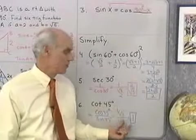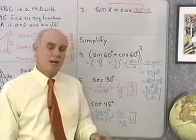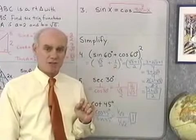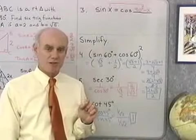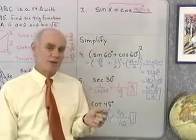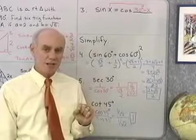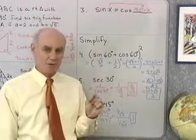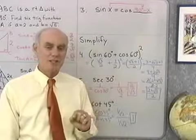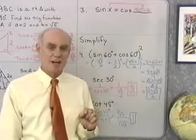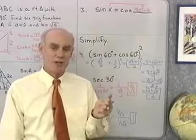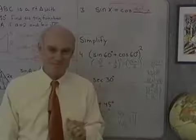So here we have our second definition for the six trigonometric functions — the right triangle definition. Because of our 30-60-90 triangles and 45-45-90 triangles, we've memorized a list of exact values of sine, cosine, and tangent of 30, 45, and 60 degrees.